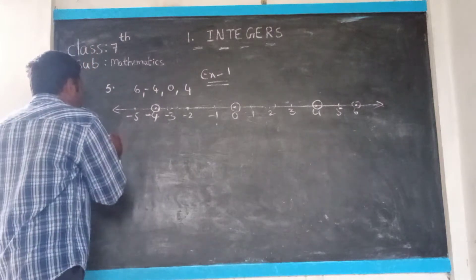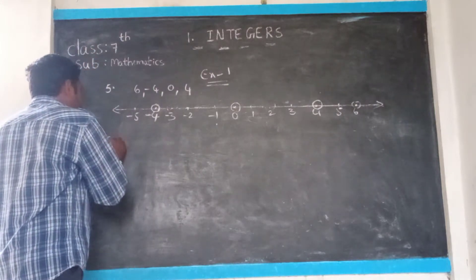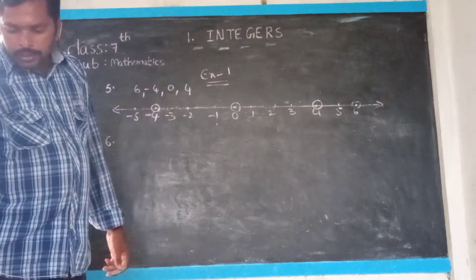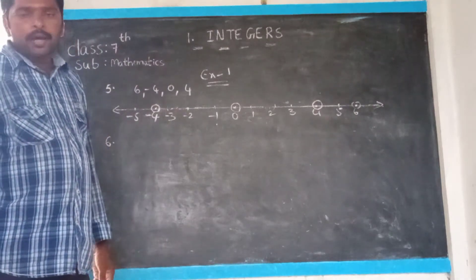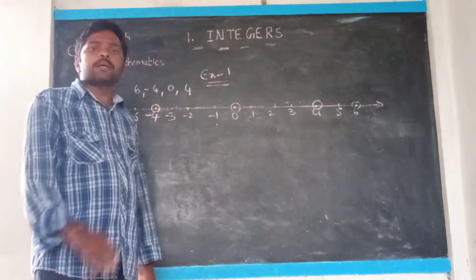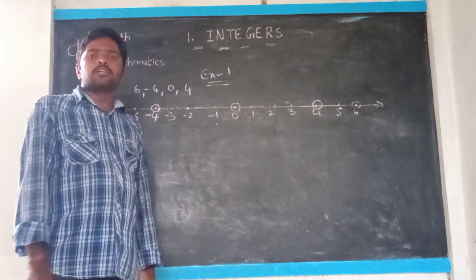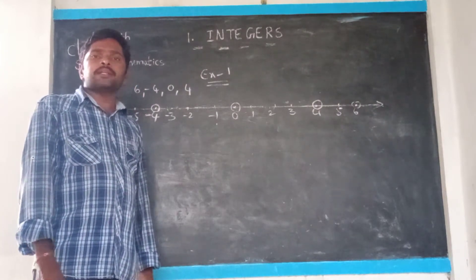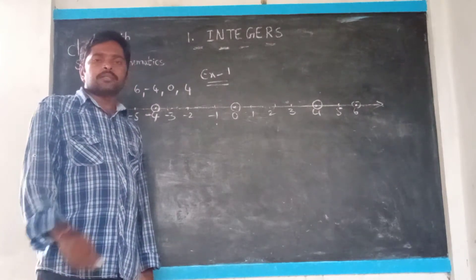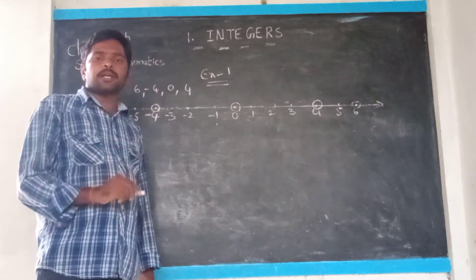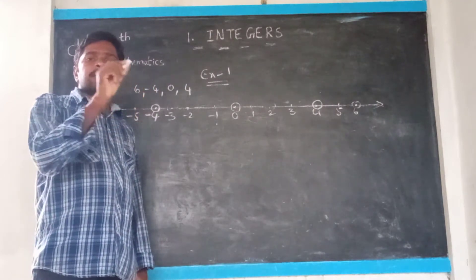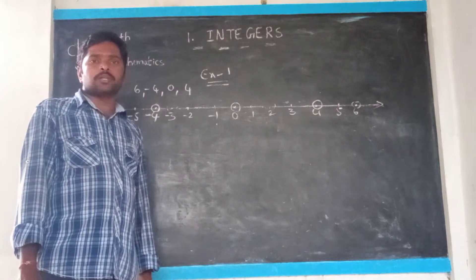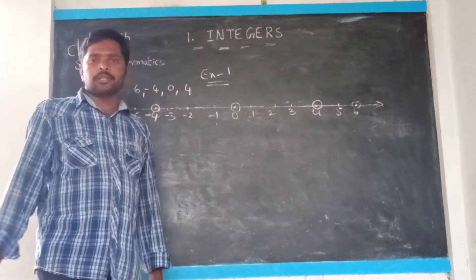Next you go to the sixth Roman. What is the sixth Roman? A number line is given and some numbers are missing. You check the number line, write the missing numbers, and do that work in your textbook.